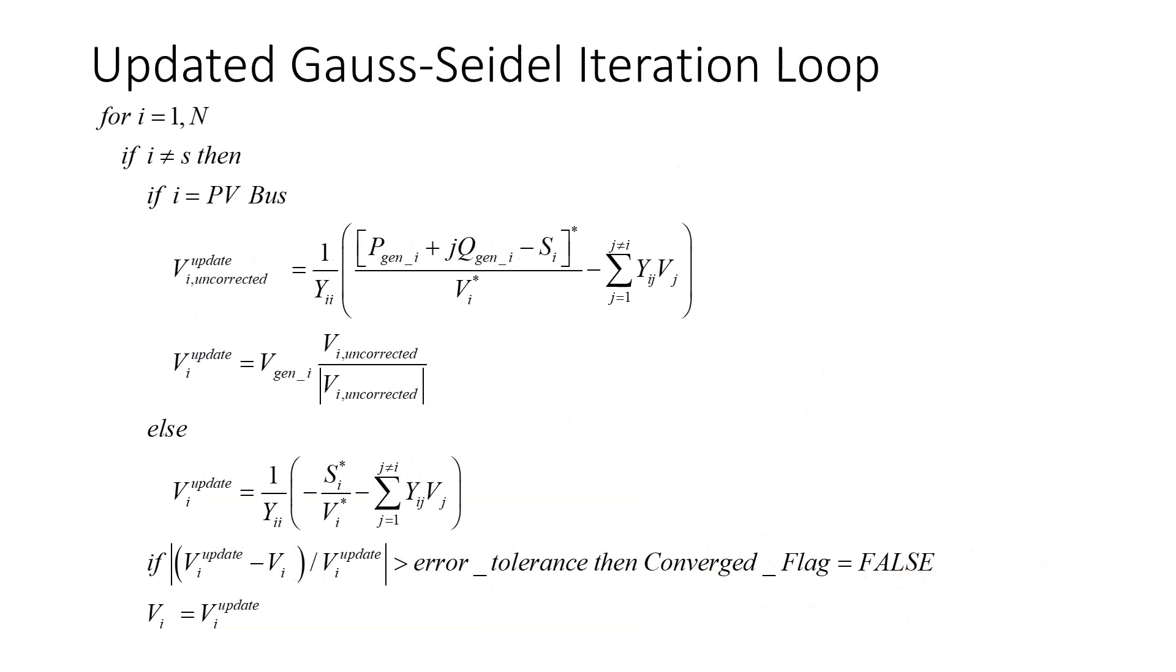An updated Gauss-Seidel iteration loop logic for a system with loads, generators, and a single-swing bus is shown here. We simply need to set up an update loop to iterate over each bus, which is not the source bus. We then apply the appropriate formulas on the previous slide, depending on whether we have a PV bus or a PQ bus. As each bus voltage is updated, we check for convergence, and if convergence for any bus fails, we set the convergence flag to false.